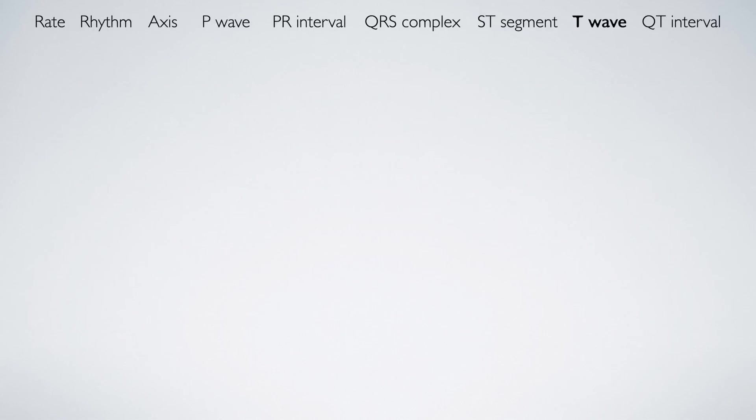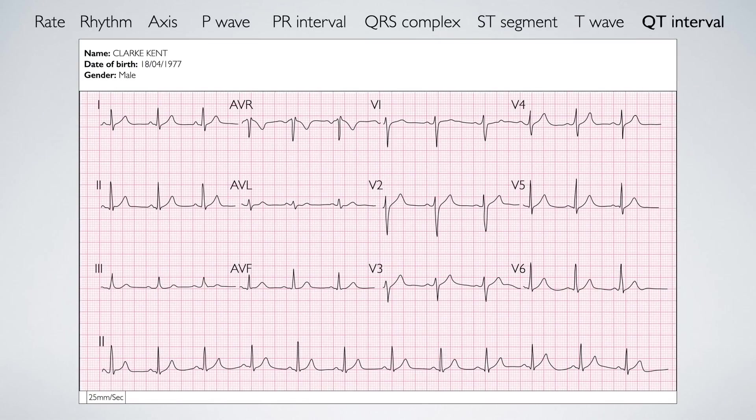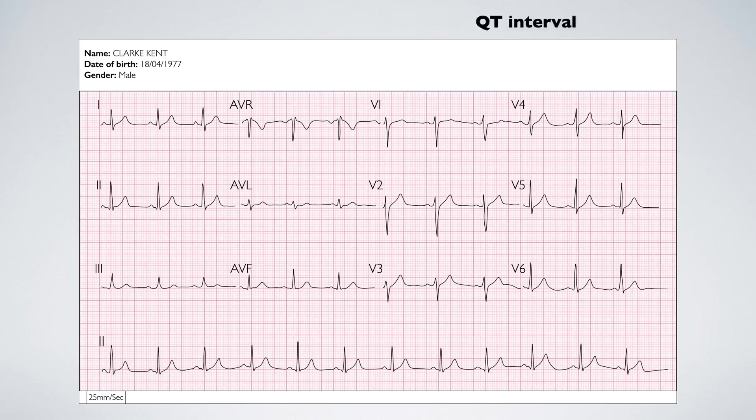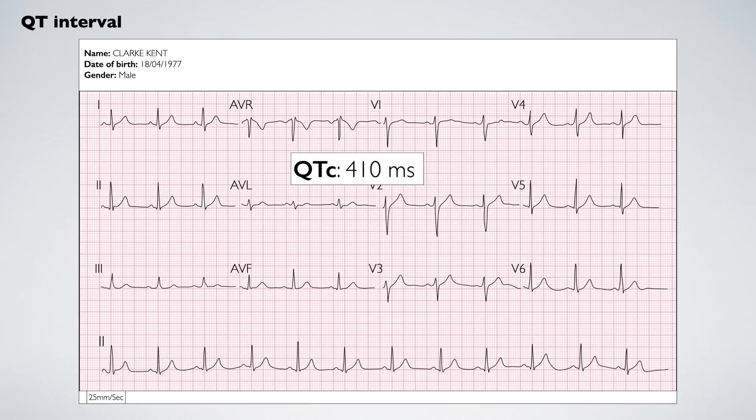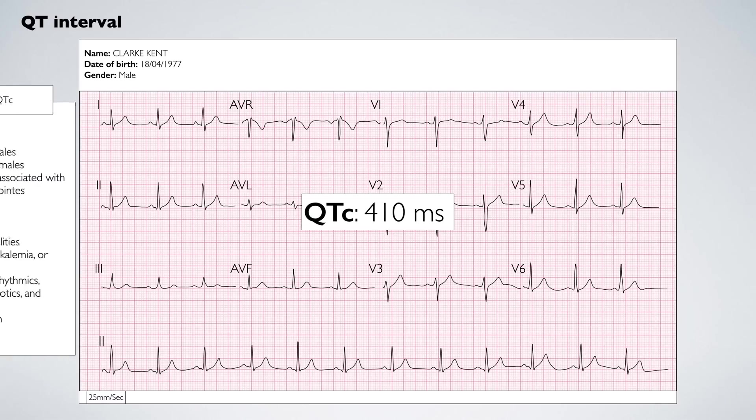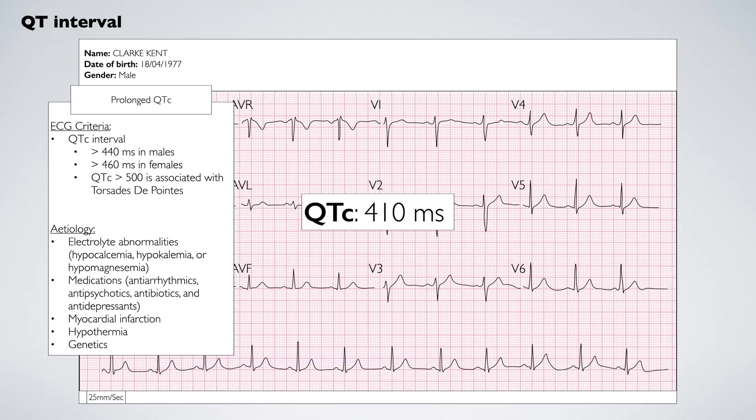Finally, we review the QT interval. You can calculate the interval by hand, but for rapid assessment, I recommend using the corrected QT interval or QTc. This is usually located at the top of the ECG along with other calculated intervals. Here we look for QTc prolongation.